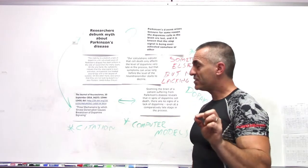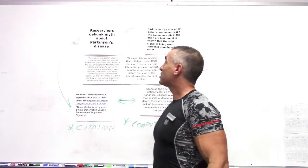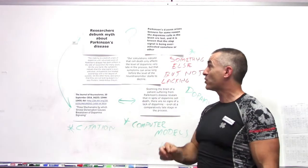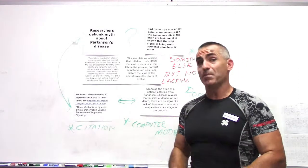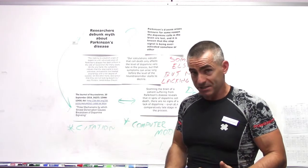However, this is where they start to come to an interesting conclusion. The inability to establish a lack of dopamine until advanced cases of Parkinson's disease has been a thorn in the side of researchers for many years. So researchers saw that low dopamine levels really didn't have anything to do with initiating Parkinson's disease.